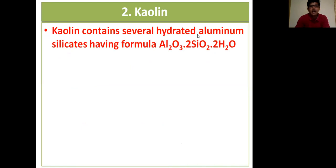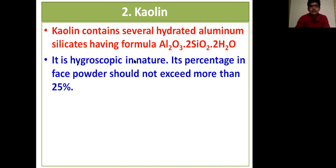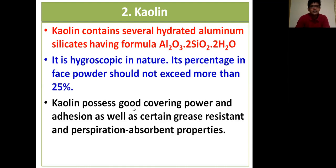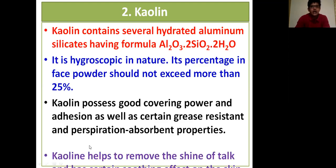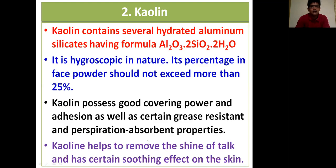Kaolin contains several hydrated aluminum silicates having the formula Al₂O₃ · 2SiO₂ · 2H₂O. It is hygroscopic in nature, so its percentage in face powder should not exceed 25%. Kaolin possesses good covering power and adhesion, as well as grease-resistant and perspiration-absorbent properties. Kaolin helps to remove the shine of talc and has a smoothing effect on the skin.